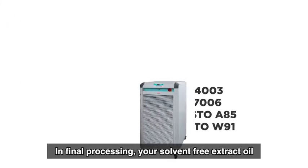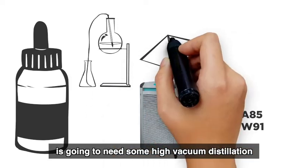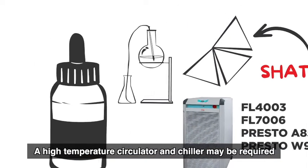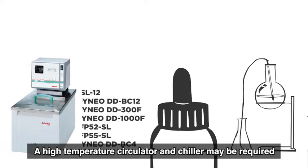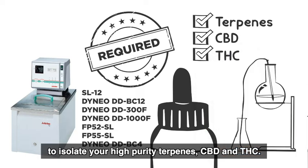In final processing, your solvent-free extract oil is going to need some high vacuum distillation if it's not shatter you're looking for. A high temperature circulator and chiller may be required to isolate your high purity terpenes, CBD, and THC.